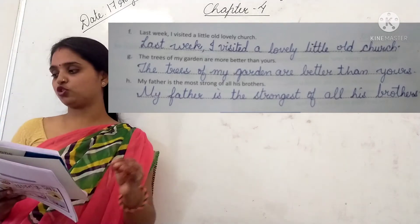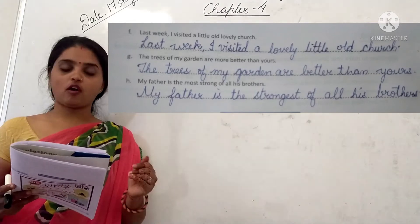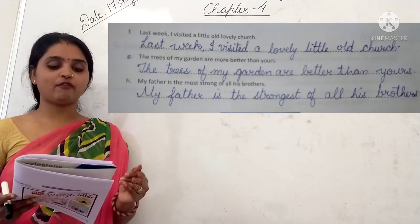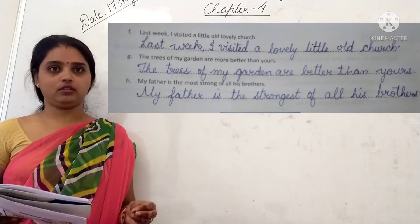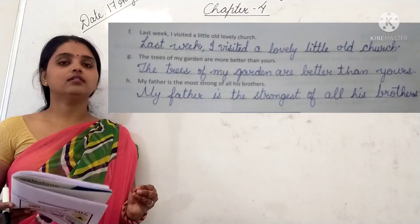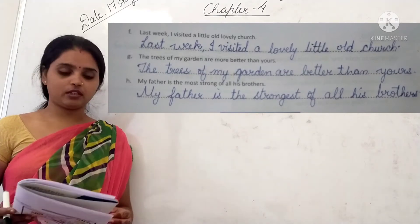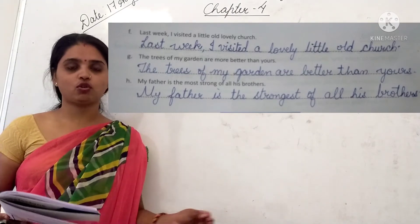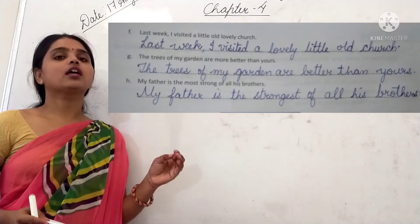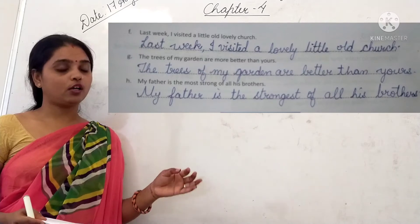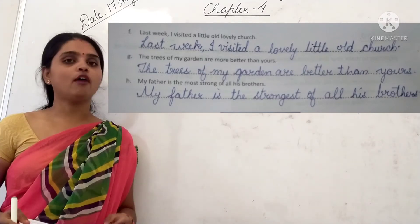Next question: 'My father is the most strong of all his brothers.' The mistake is that when we use 'most,' we should use the base form but for 'strong' the correct superlative is 'strongest.' So the answer is: 'My father is the strongest of all his brothers.' Now take a screenshot and write this in your practice work. If you don't have the textbook, write the whole part in your notebook.